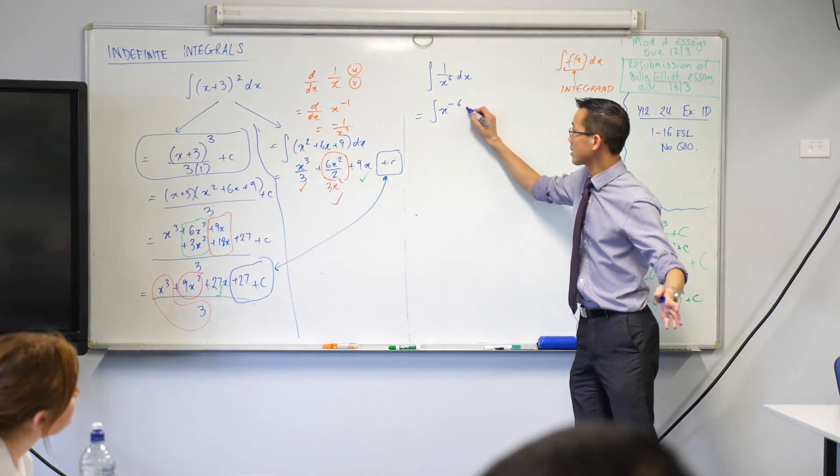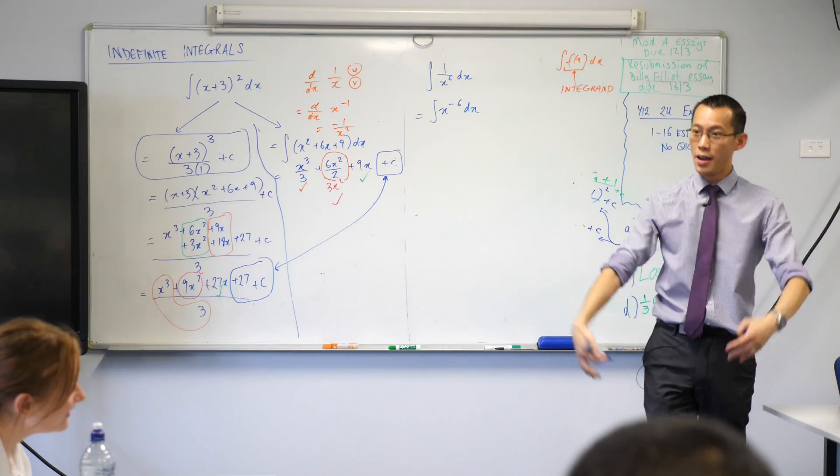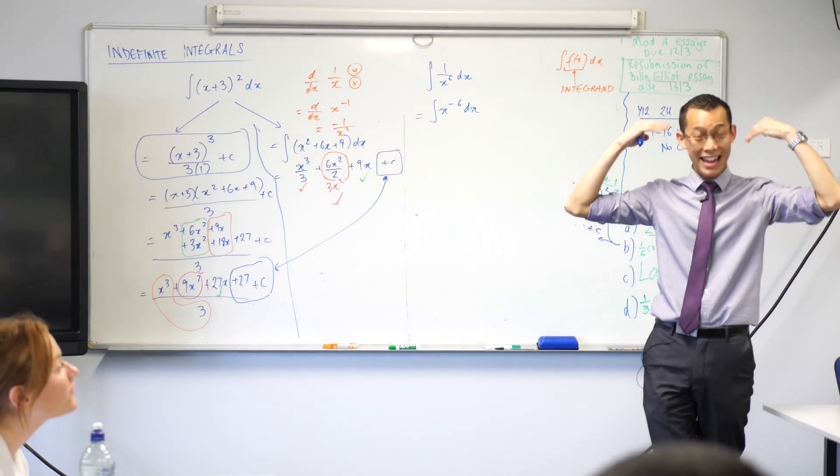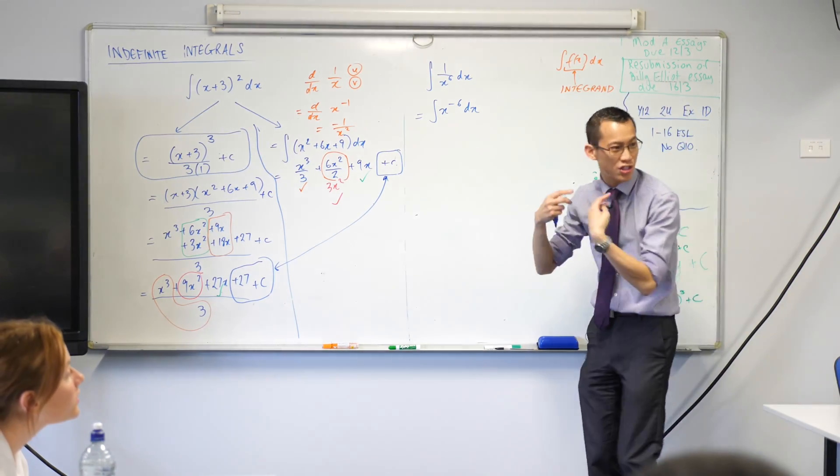Yep, negative 6. Fantastic. So once you've got everything in index form, your anti-differentiation, your integration brain can just kind of take over.